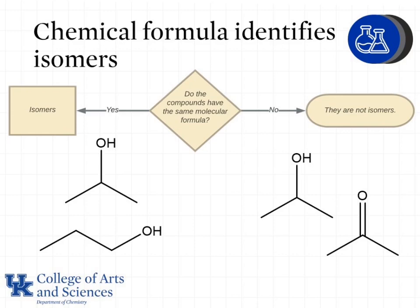The first question we see is: do the compounds have the same molecular formula? If they do not have the same molecular formula then they are not isomers and we're done. So we start by adding hydrogens and counting our carbons, hydrogens, and oxygen atoms. For the molecule on the top left we see C3H8O, and on the bottom left we also see C3H8O.